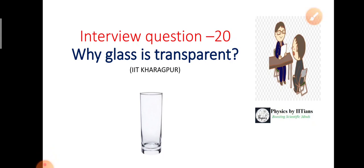In daily observation we actually ignore the basic physics of why glass is transparent, why metal is opaque, and what factors decide whether an object is opaque or transparent. This opacity or transparency is in the visible wavelength — the electromagnetic radiation range from 380 to 700 nanometers — which we can see with the naked eye.